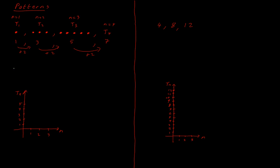So when n is 1, tn is 1. Next one, when n is 2, tn is 3. When n is 3, tn is 5. So these are my points that I can put on my coordinate plane.